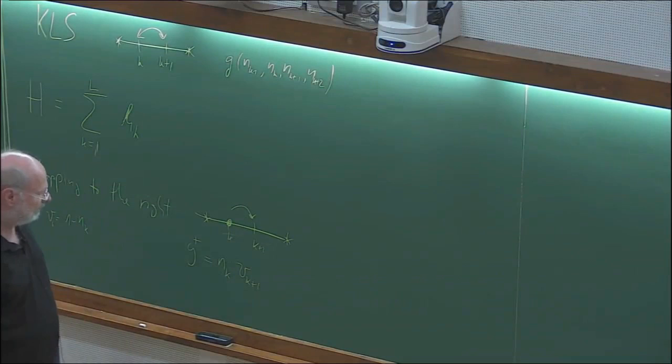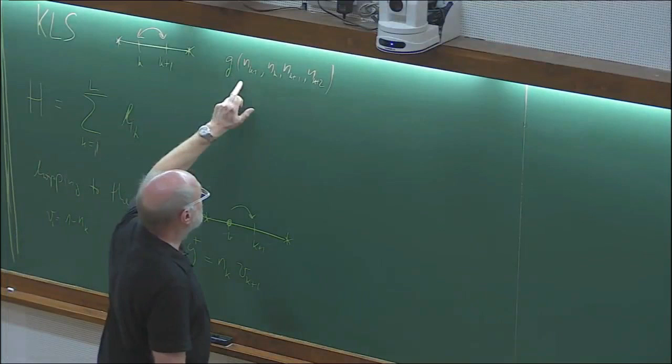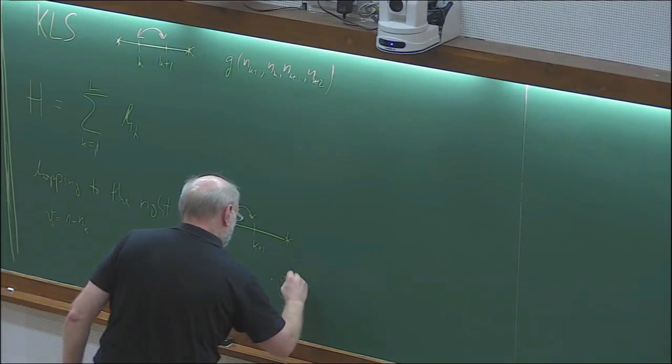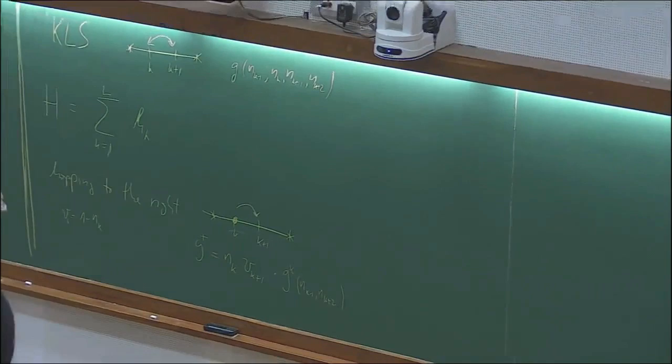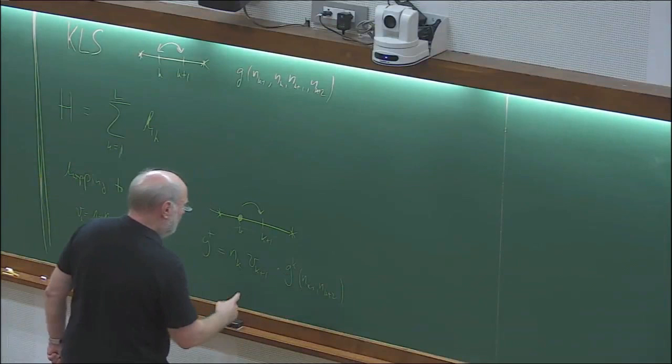There is additionally a dependence on the neighbors, so the rate is multiplied by a function G_K of N_{K-1} and N_{K+2}, which I wrote down previously. This gives the rate for hopping to the right, proportional to R.